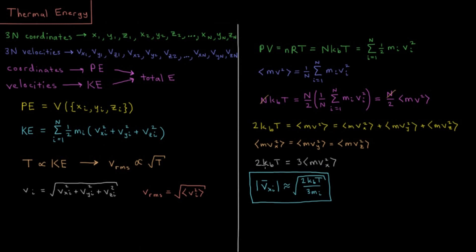Simplifying this into our final algebraic result, we say that the magnitude of the average value of our velocity in any given direction for any given particle that we have in our system that we use to assign initial velocities, we're going to say that that's approximately the square root of 2 Boltzmann constant times temperature divided by 3 times the mass of the particle.